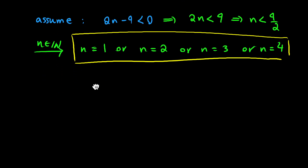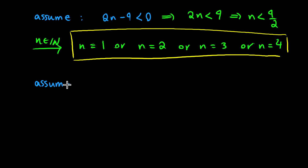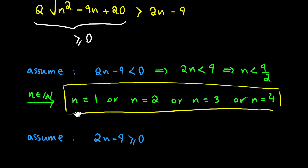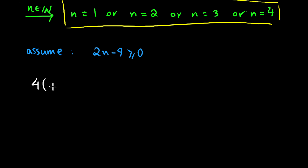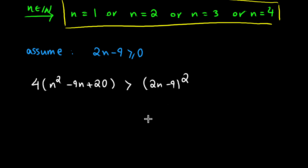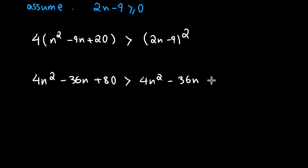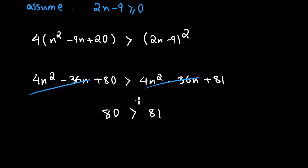Now let's assume that 2n minus 9, the right hand side of our inequality, is something non-negative. If that happens, we can go ahead and square both sides. So we will have 4 times n squared minus 9n plus 20 is greater than the quantity 2n minus 9 all squared. This gives us 4n squared minus 36n plus 80 is greater than 4n squared minus 36n plus 81. The n squared and 36n terms cancel, leaving 80 is greater than 81, which is a contradiction.